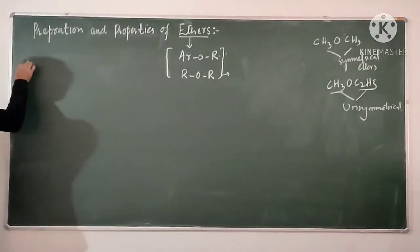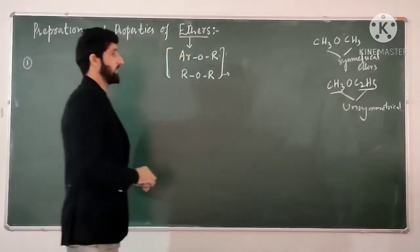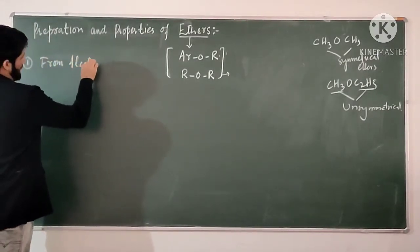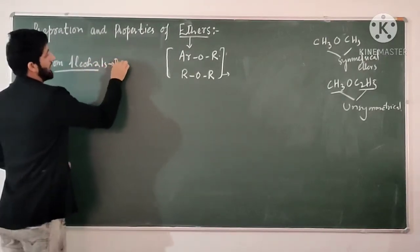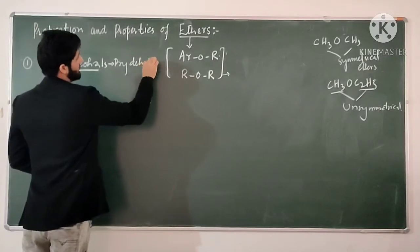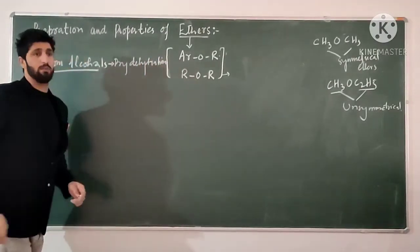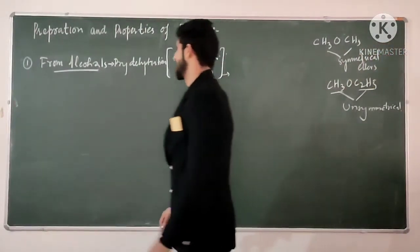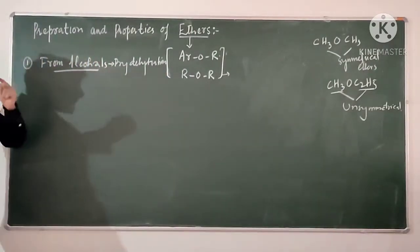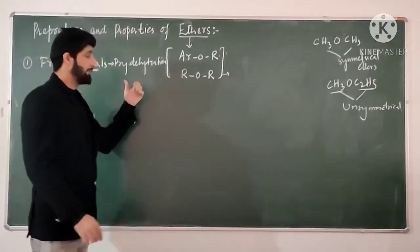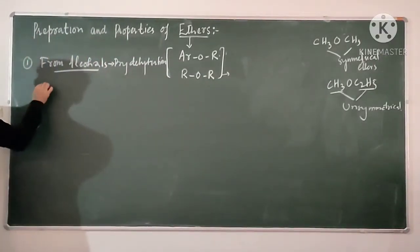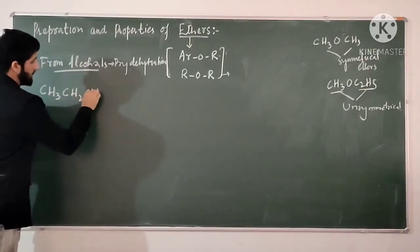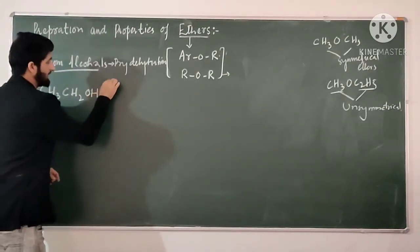Method number one for preparation of ethers is from dehydration of alcohol. We can prepare ether from alcohol by acidic dehydration — meaning in the presence of acid, we remove a water molecule. We take ethanol: CH3CH2OH. If we react ethanol with sulfuric acid, two conditions arise depending on temperature.